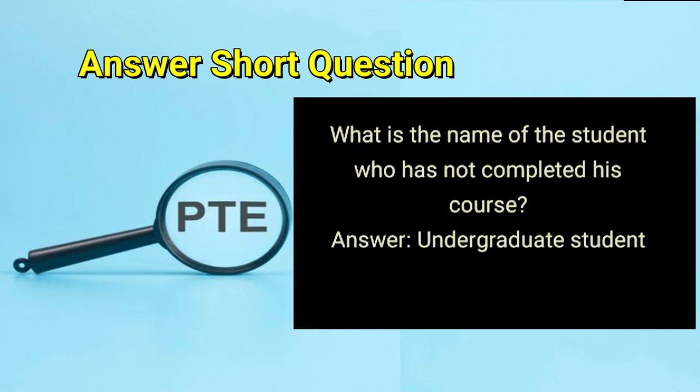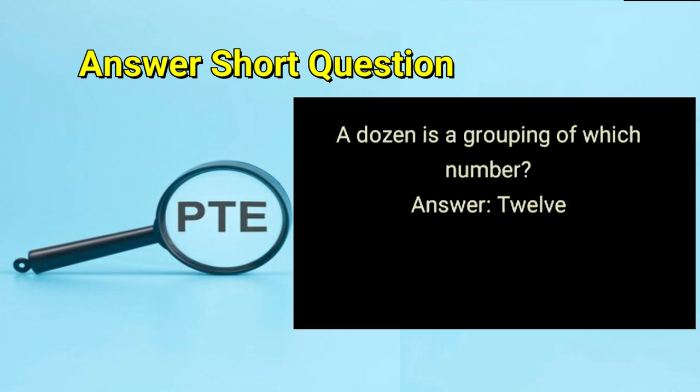What is the name of the student who has not completed their course? Answer: undergraduate student. A dozen is a grouping of which number? Answer: 12.